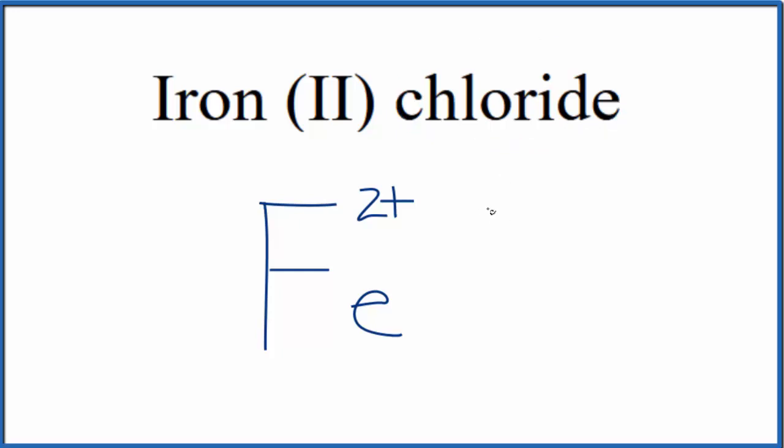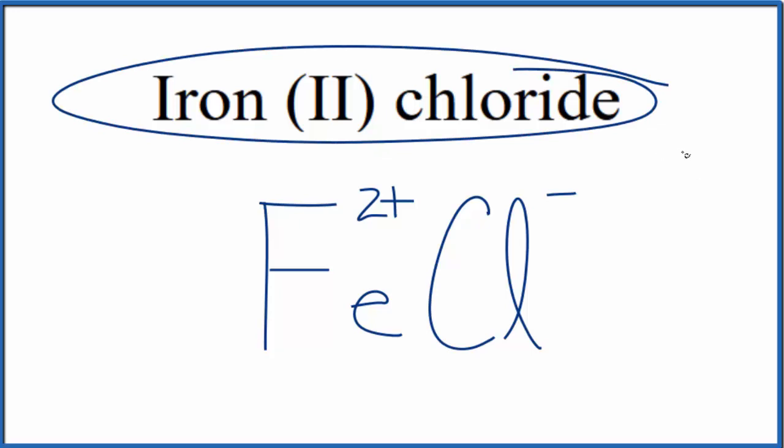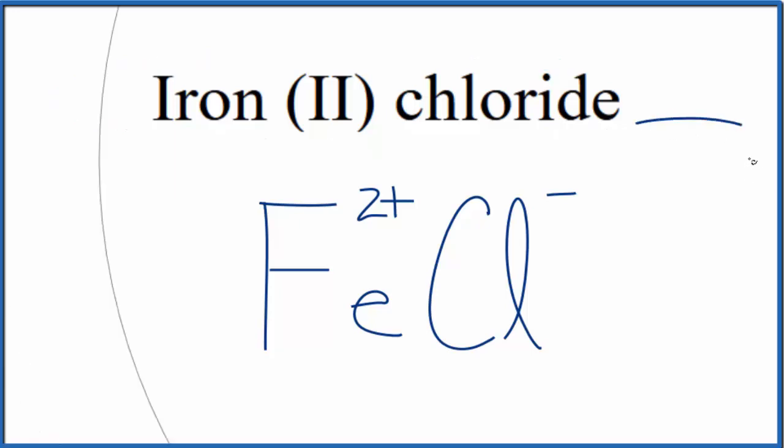Chloride, that's chlorine, so we'll write Cl. And on the periodic table, chlorine's in group 17, sometimes called 7A. It has a 1- ionic charge. So since Iron (II) chloride is neutral, it doesn't say ion after the word,